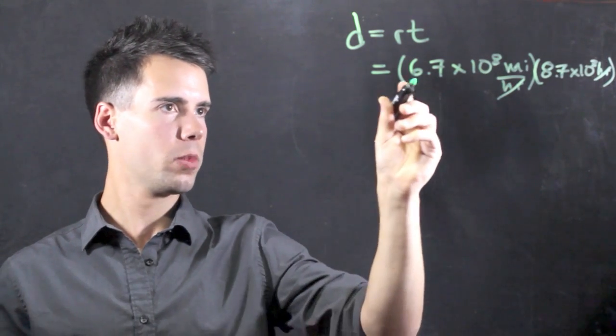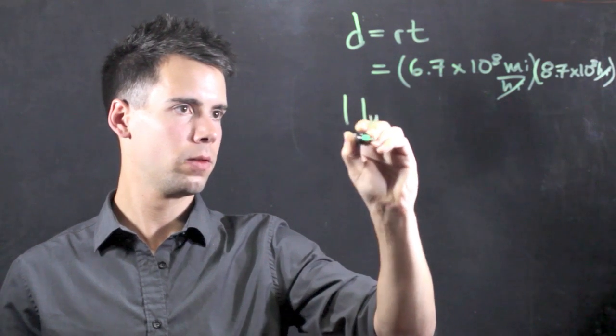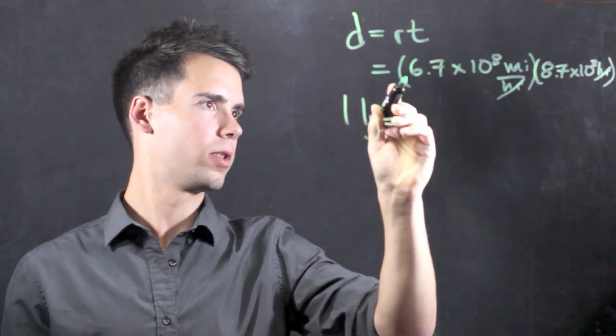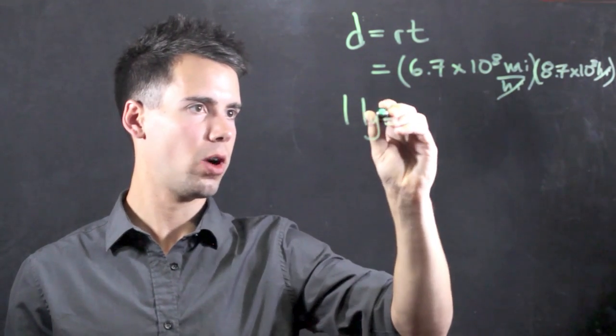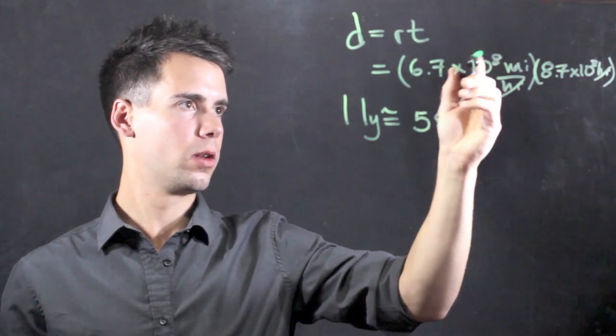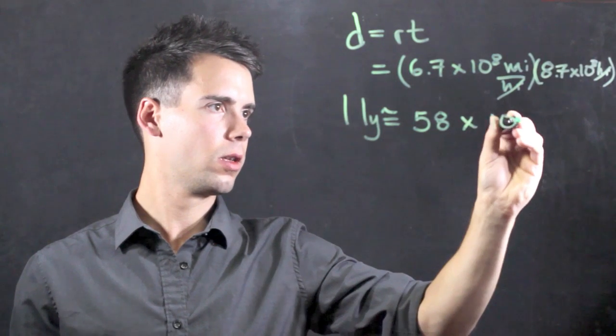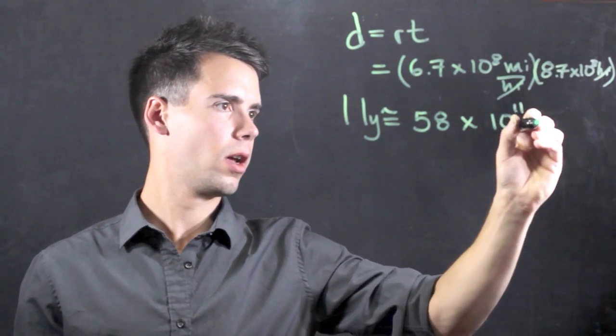Now from the calculation one light year the distance is simply equal to 6.7 times 8.7 which is approximately 58. We look at the exponent terms times 10 to the 11 and this is in miles.